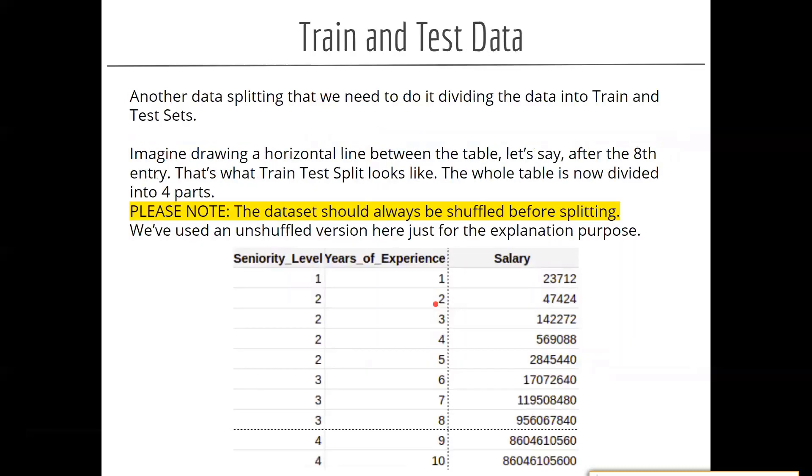And then what we need to do is we need to split the dataset into train and test. Now why we need to do it? Basically, on train dataset we train our model. We try to build our model on the train dataset.